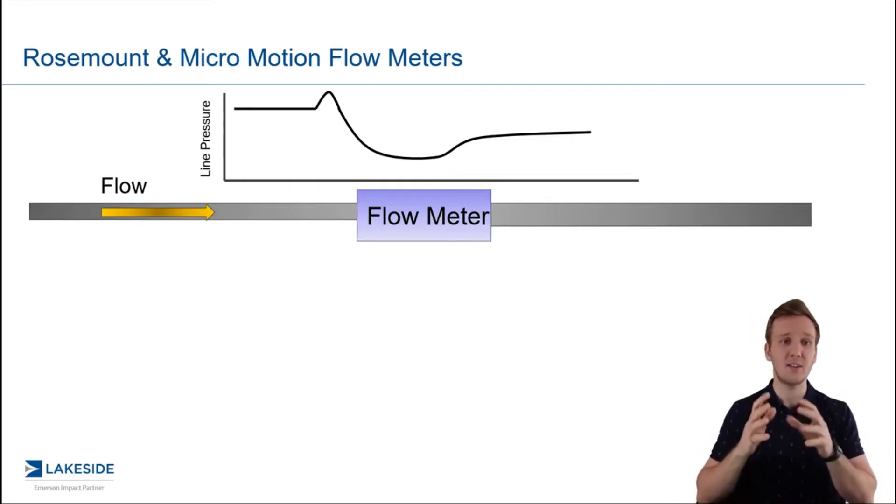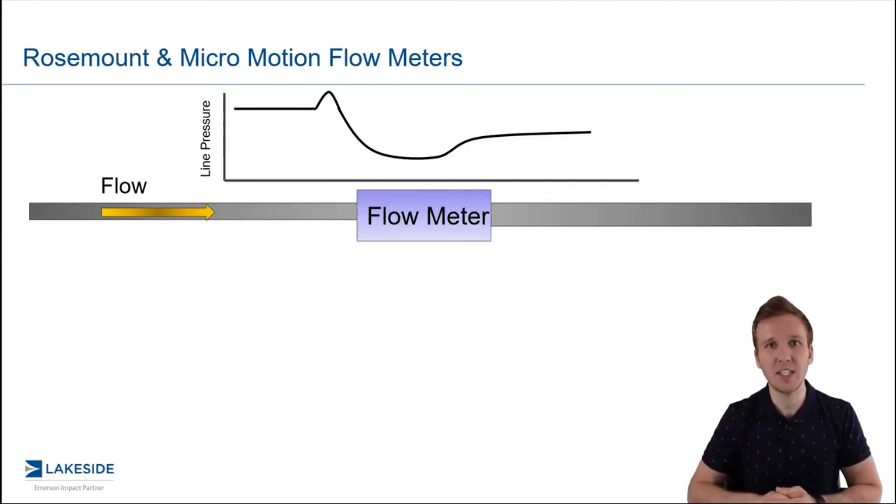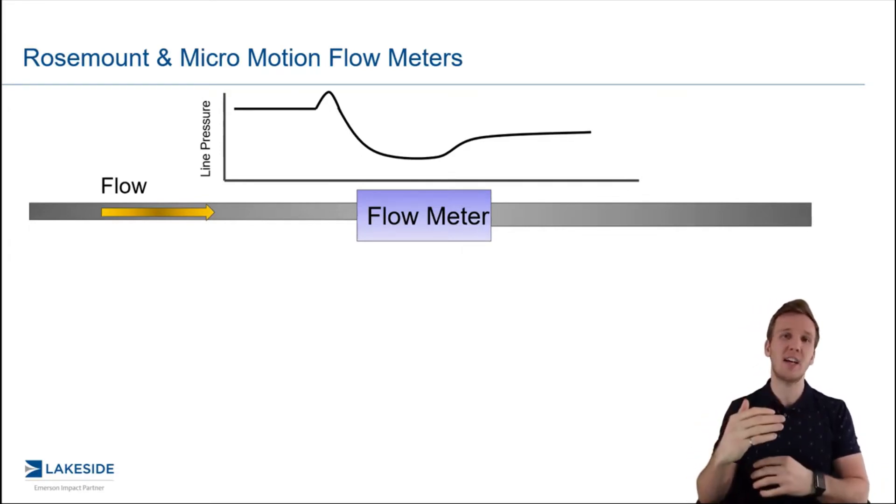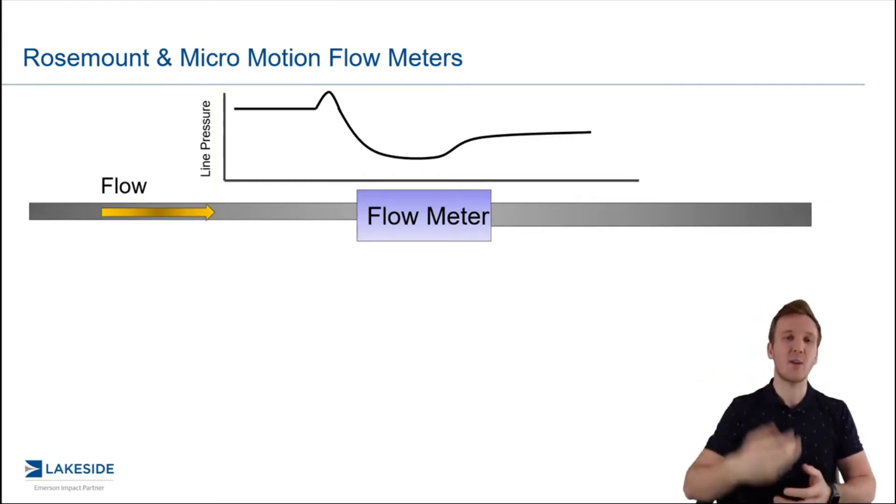Now, as you can see, there's a specific line pressure beforehand, say it's 100 PSI, and then right before that flow meter, we actually have a slight uptick, a slight increase, and that's because the flow meter typically restricts the cross-sectional area. So you kind of have that buildup, if you will, of product that increases that pressure.